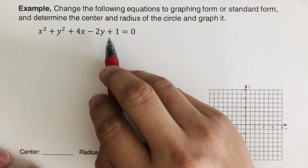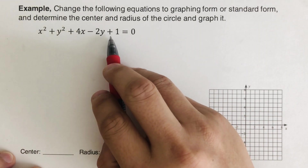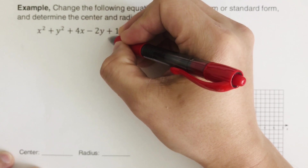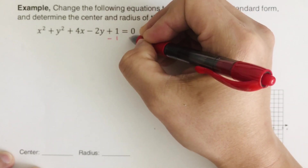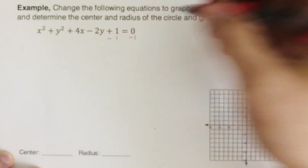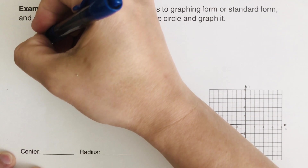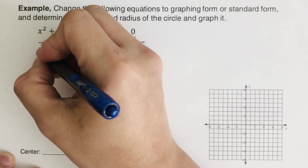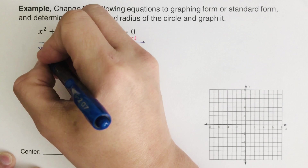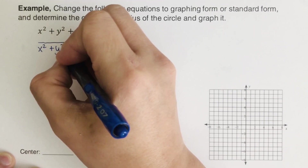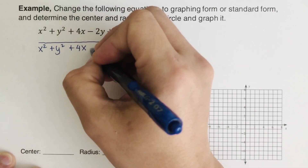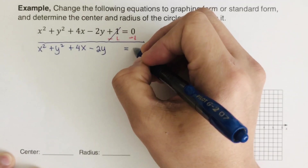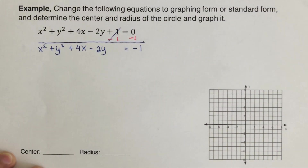The first step is to move the constant to the right side. In this case I am going to subtract one from both sides, so minus one here, and we can cross the constant out from the left. This gives us x squared plus y squared plus 4x minus 2y equals negative 1.